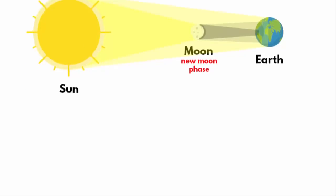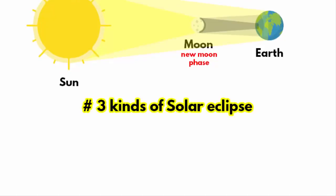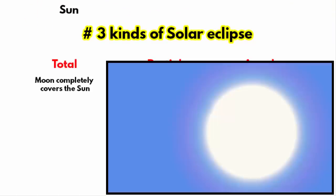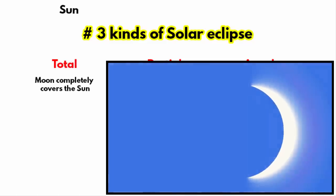The next thing that you need to understand is that there are three kinds of solar eclipse – Total, Partial, and Annular. A total solar eclipse occurs when the moon completely covers the sun, as seen from the earth. That too, it can only be seen from a limited area on earth.